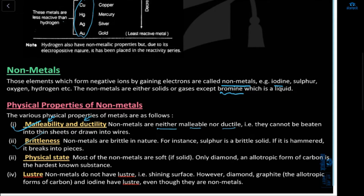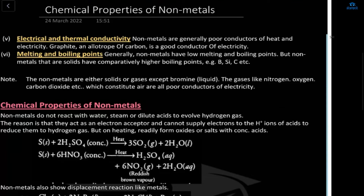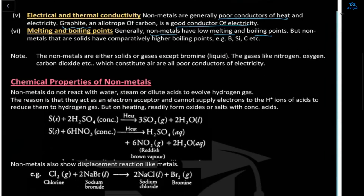Most non-metals are soft solids, but diamond is the hardest substance and diamond is a non-metal. Non-metals do not have lustre — they do not have a shiny surface. Regarding electrical and thermal conductivity, non-metals are generally poor conductors of heat, but graphite is an exception — it is a good conductor of electricity. Non-metals have low melting and boiling points, opposite to metals which have high melting and boiling points.